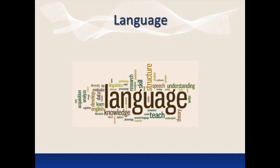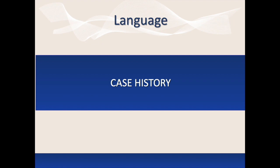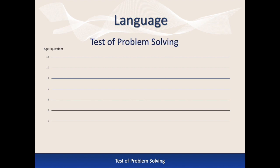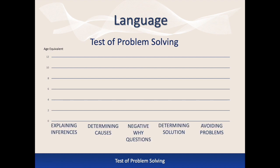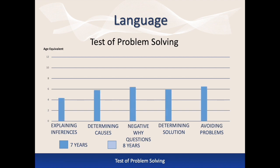Language is a vast realm and Berard AIT impacts all of its many different facets. In this case history of an elementary grade student, the Test of Problem Solving was given annually from age seven to nine, before and after Berard AIT. This test measures the individual's abilities to use a variety of logical reasoning skills for problem solving. There are five types of skills measured and results are given in age-equivalent scores. Before AIT, results for two consecutive years at age seven and eight indicate her achievement was well below her chronological age, with little or no progress from one year to the next.